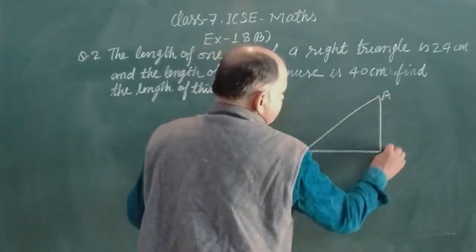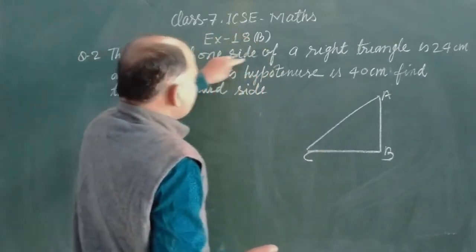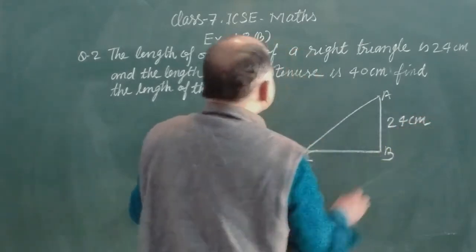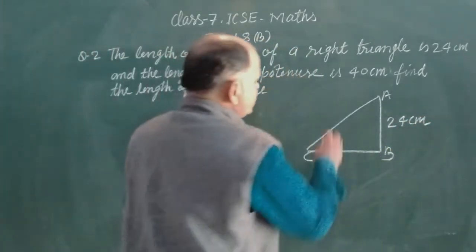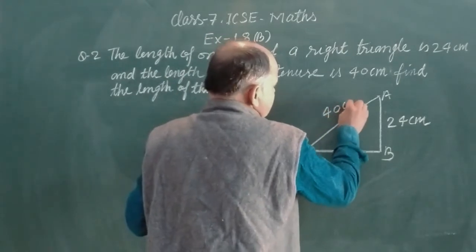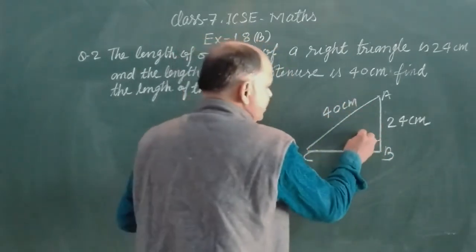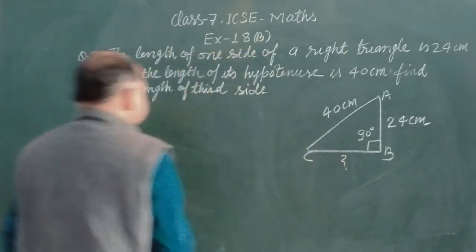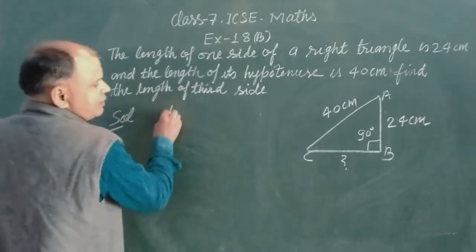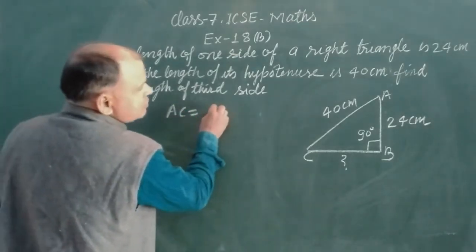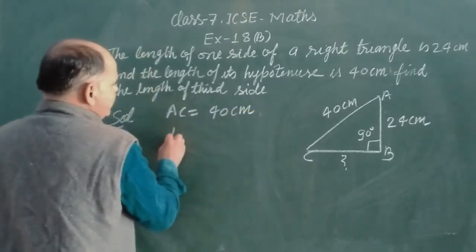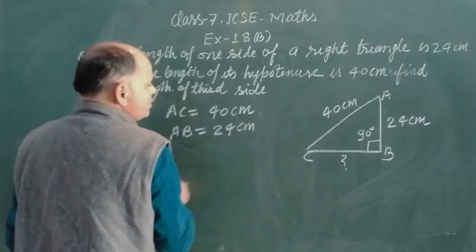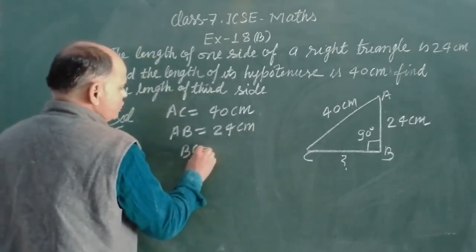So this is also based on right angle triangle, so we make our right angle triangle here. This is ABC, and length of one side of the right angle triangle is 24 cm and the length of its hypotenuse is 40 cm, because B is right angle. Now we find BC. So let AC is given 40 cm and AB is given 24 cm, and we want BC.